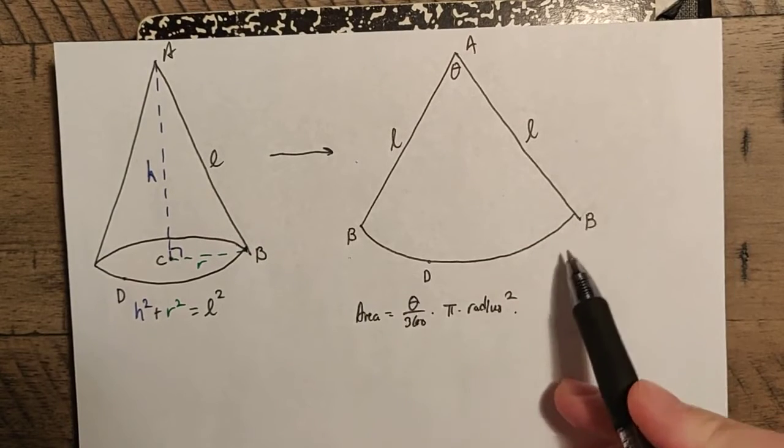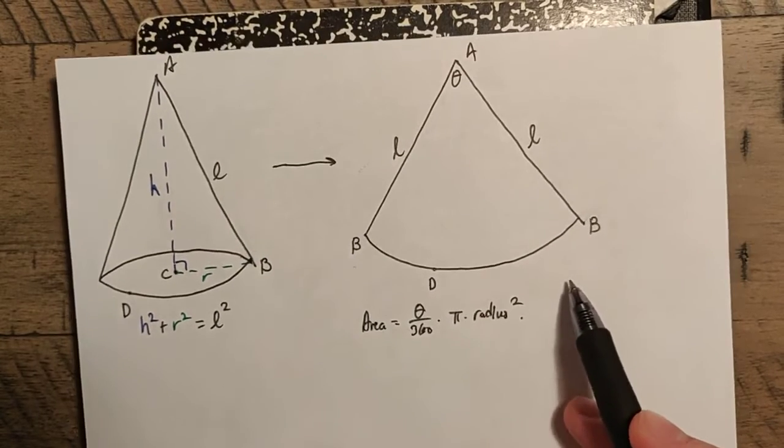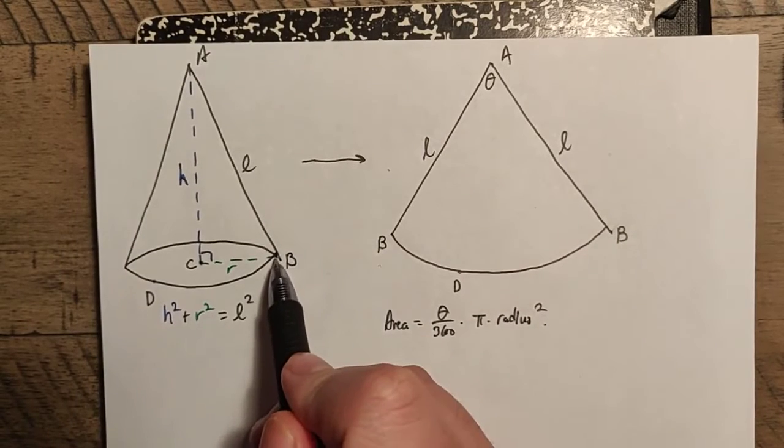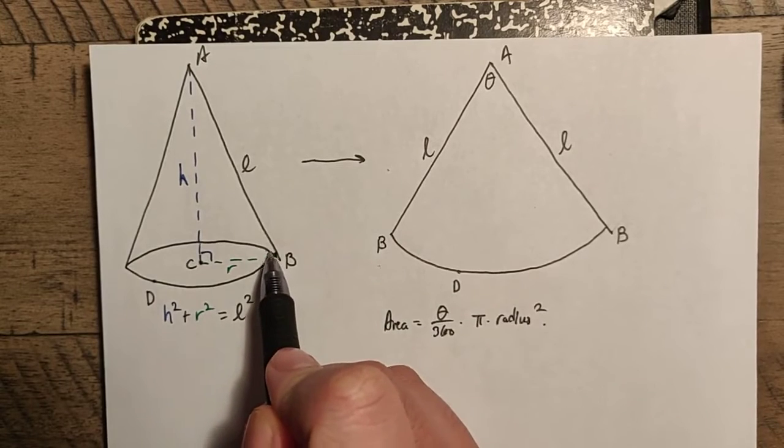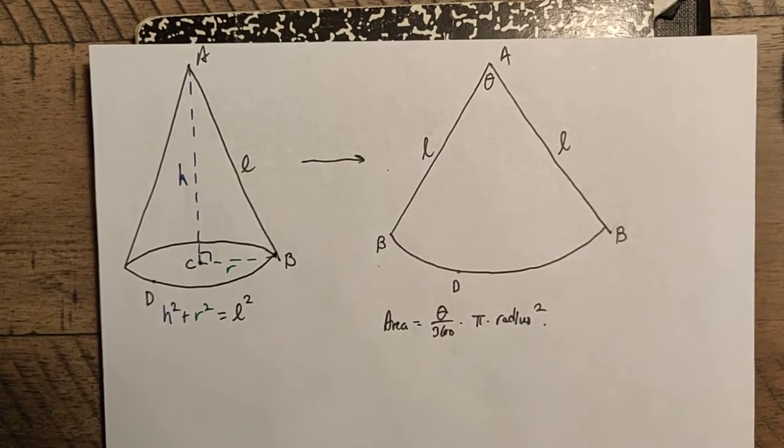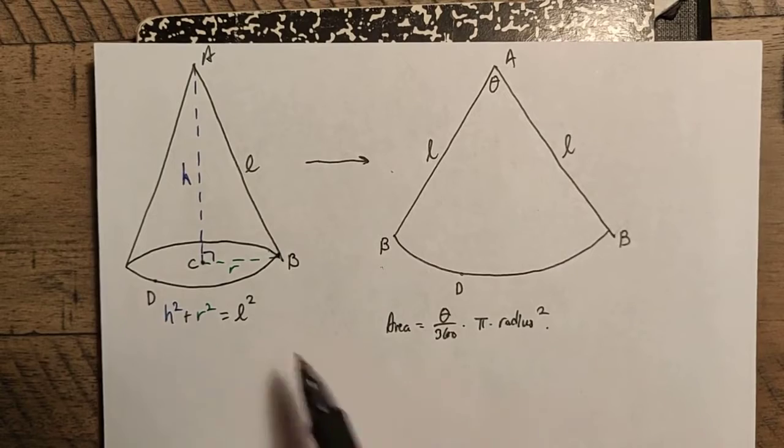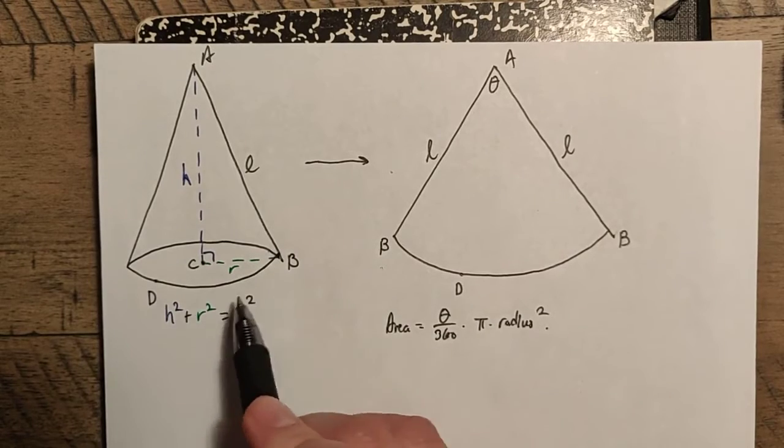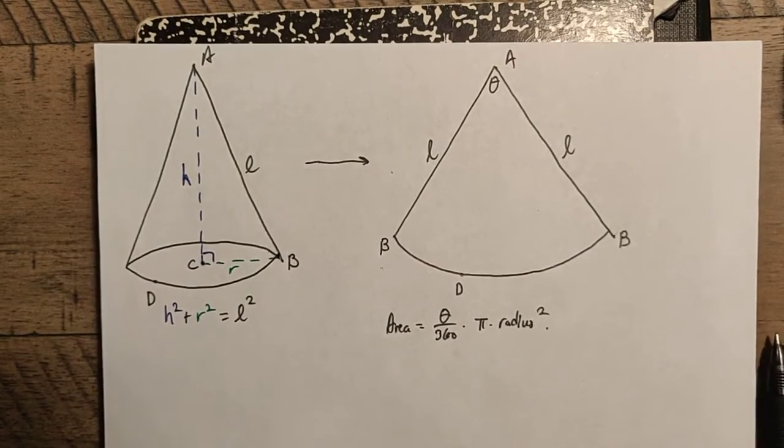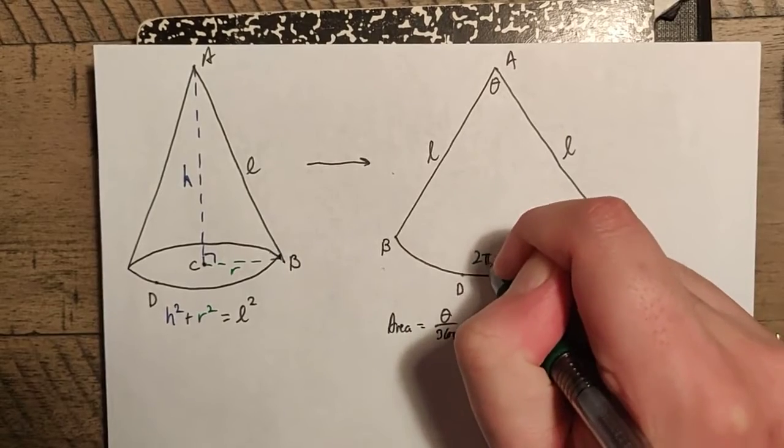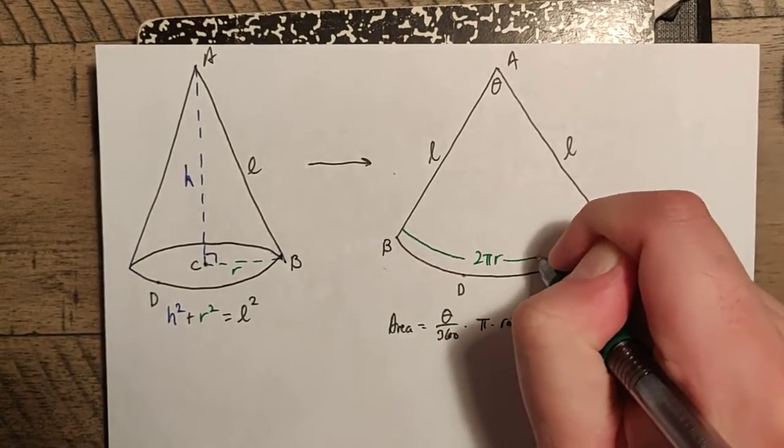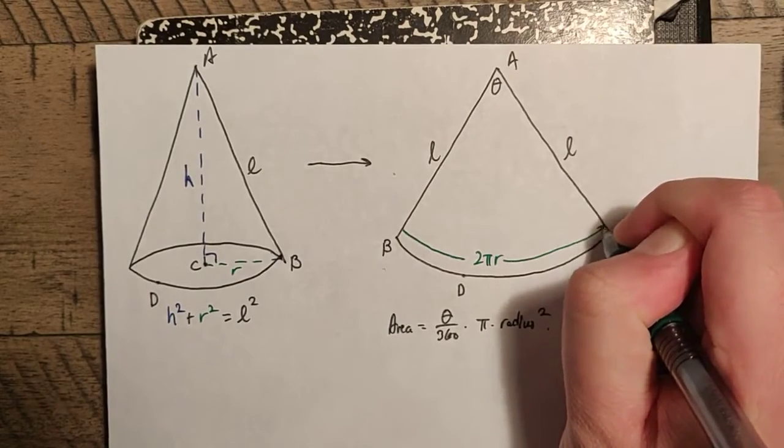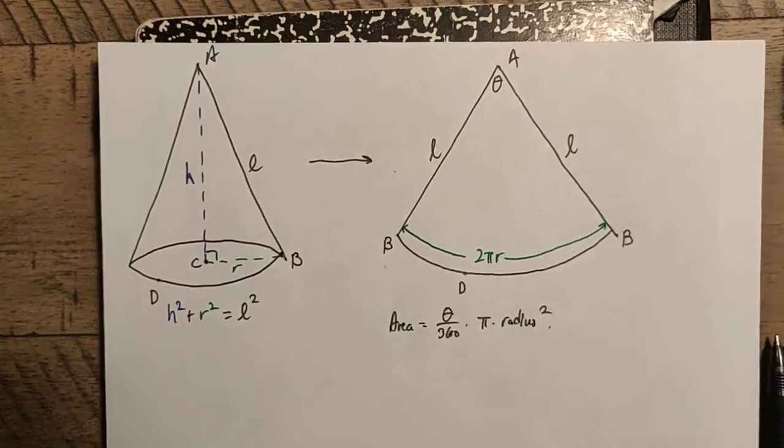Note that BDB here, this arc down here, it came from this circle, because I unwrapped the cone around this. So, this arc BDB is actually this circular base down here. So, as a result, we know that this here is going to have a length equal to the circumference of the circle, and that's 2 pi r. Which means that 2 pi r here is going to be this length. Note it's not a measure, it is a length.